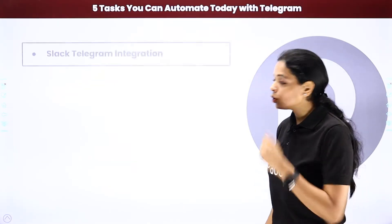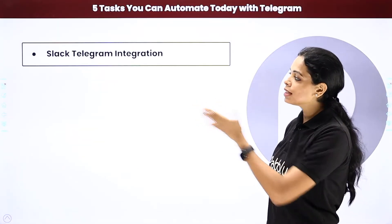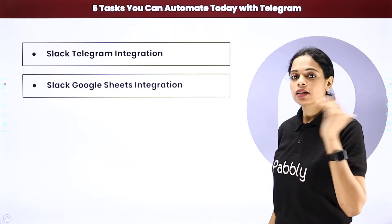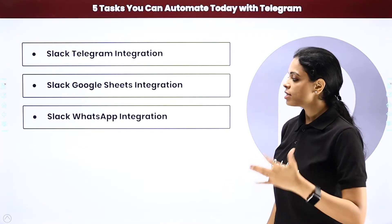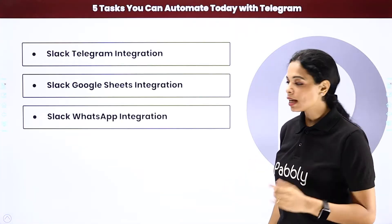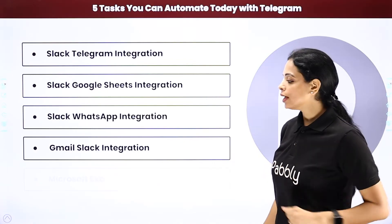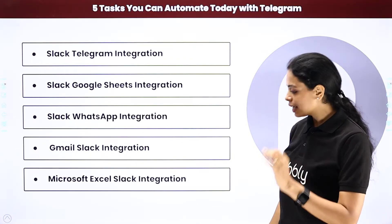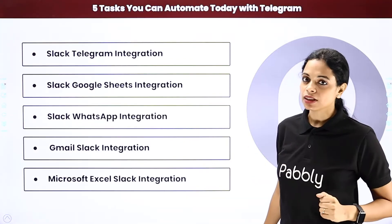Let's have a look at these automations. The first one is Slack and Telegram integration, then Slack with Google Sheets, then we have Slack with WhatsApp, Gmail Slack integration, and finally Microsoft Excel Slack integration.